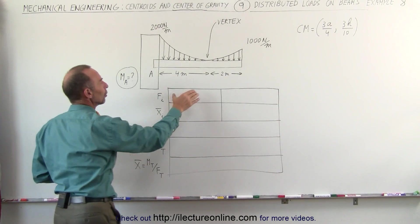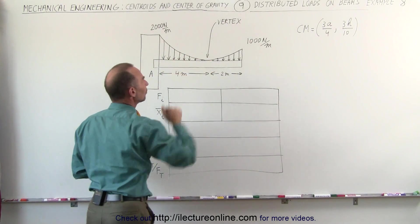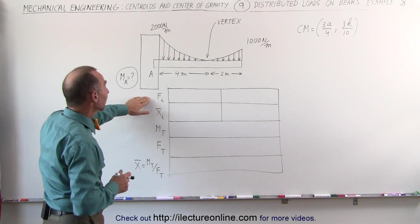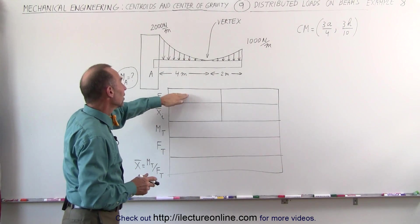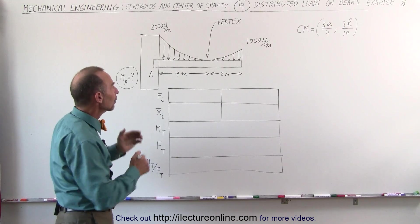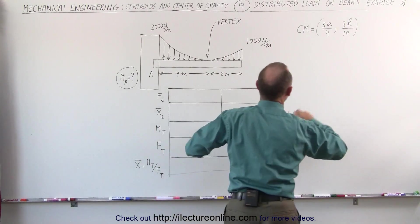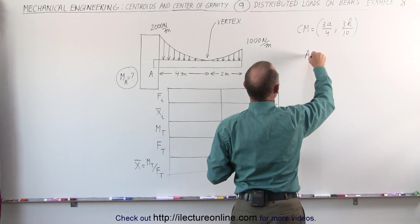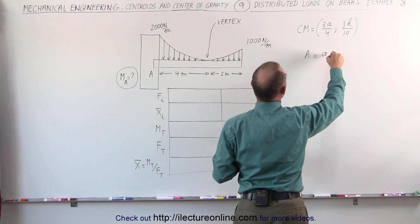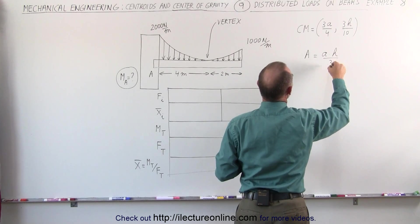We first want to find the total force of each of the segments and realize that the area is representative of that force. Now how do we find the area of a parabolic shape like that? To do that you should realize that the area of each segment is equal to A times H divided by 3.